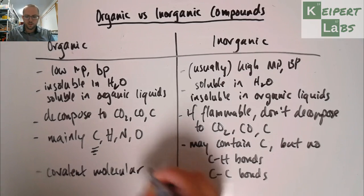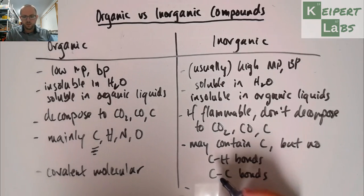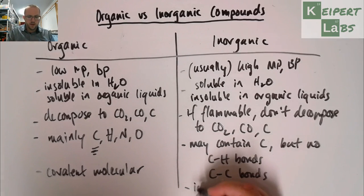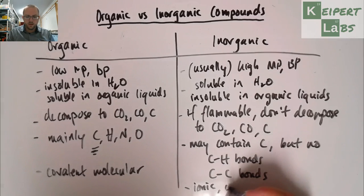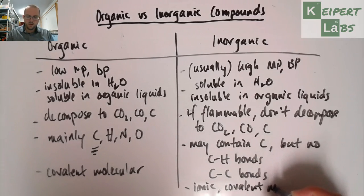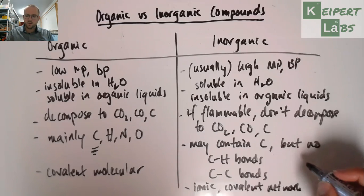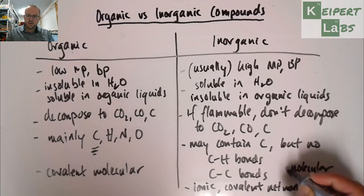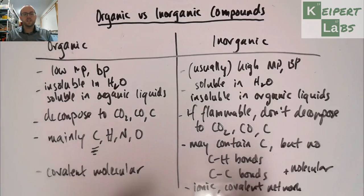So organic substances are covalent molecular. So they exist in discrete molecules. And then what we've got is we might have ionic covalent network. And we may also have molecular. So it could fall in any of these kind of categories depending on which substance that we're talking about. Thanks very much for watching. Bye for now.